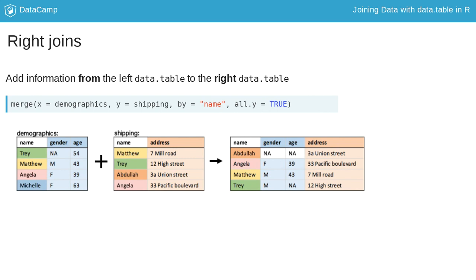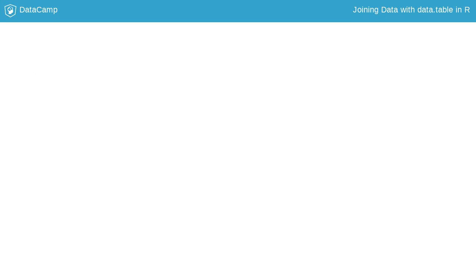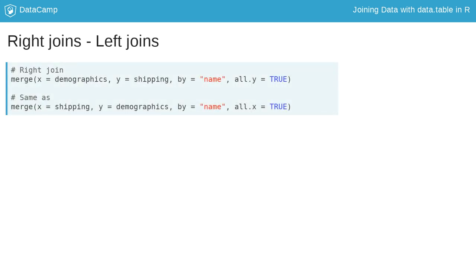To perform a right join with the merge function, you set the argument all.y to be equal to true. The outcome is the same as swapping the order of the data tables in the merge function and performing a left join.